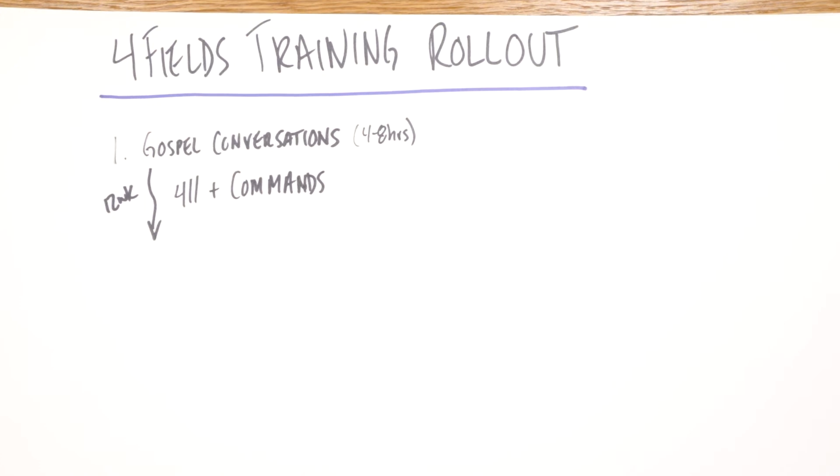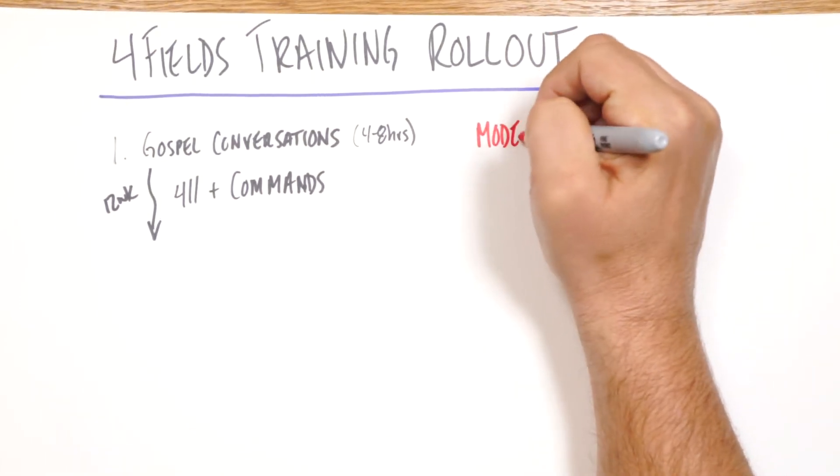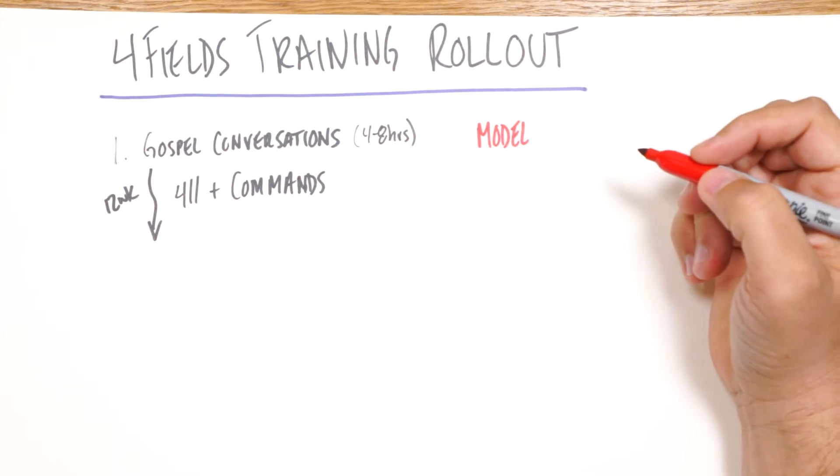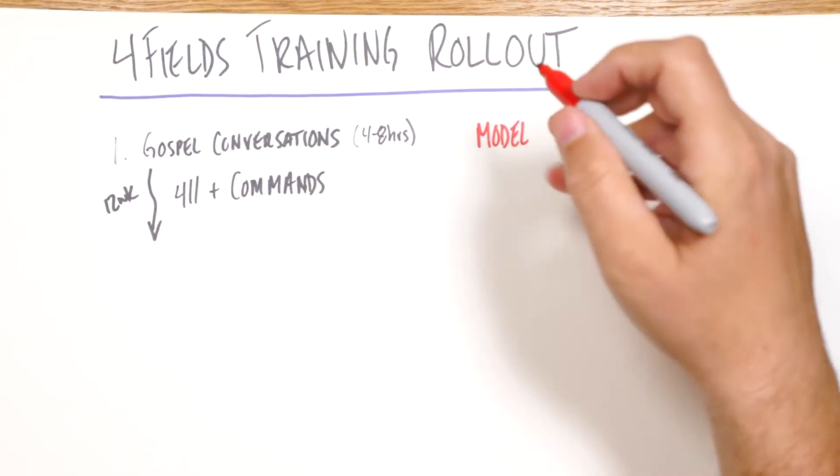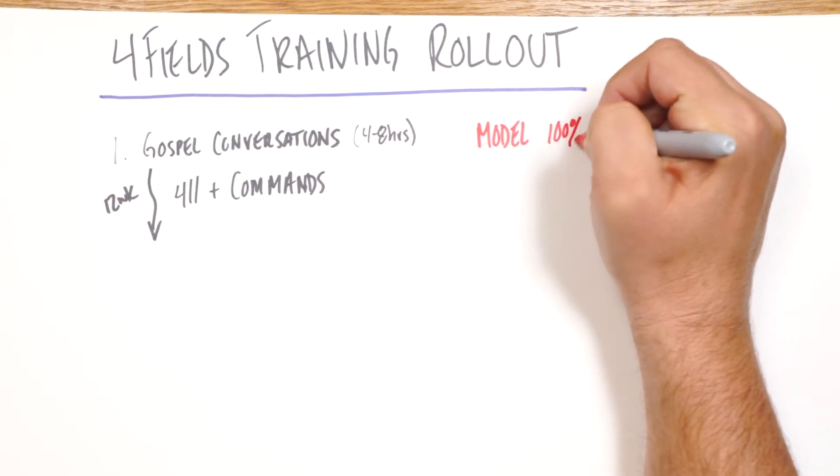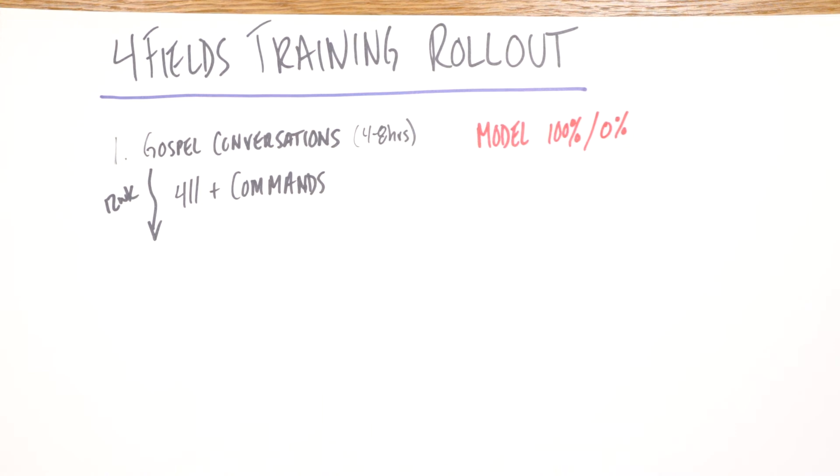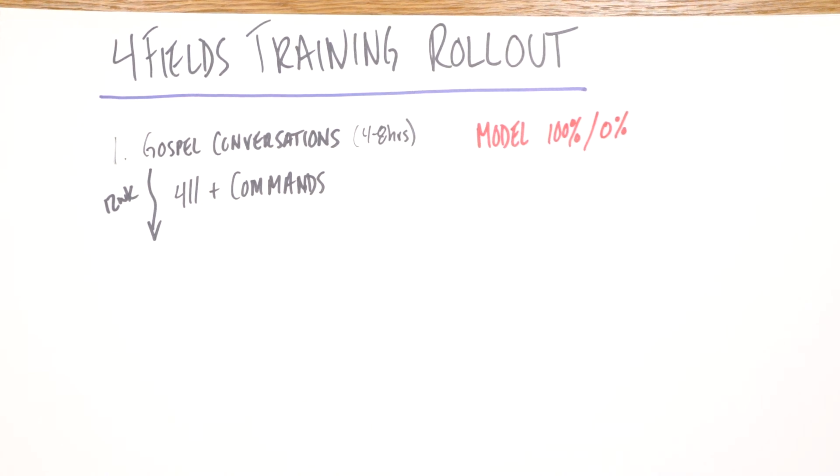And we would come in as a swarm team, which means multiple people coming in, and most of them on their own dime, just to model this training, which means 100% of the trainers are from the outside, and the locals will watch to learn.